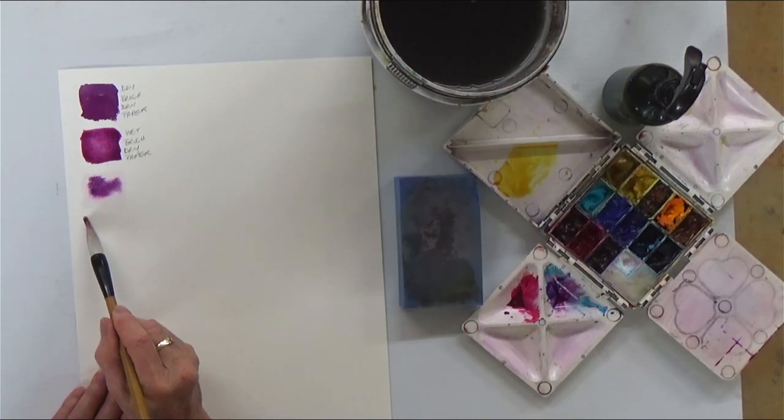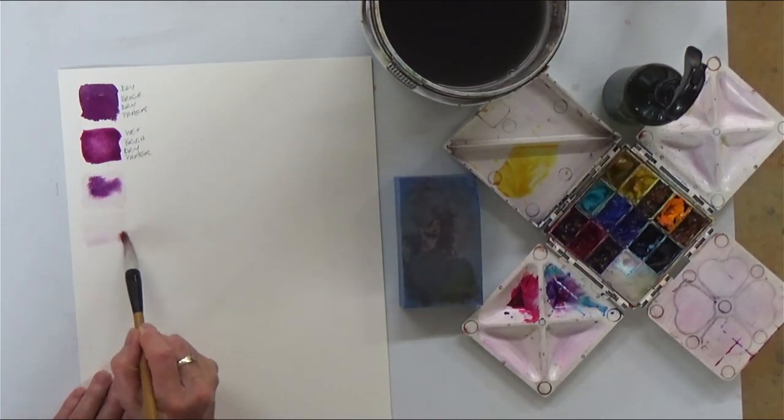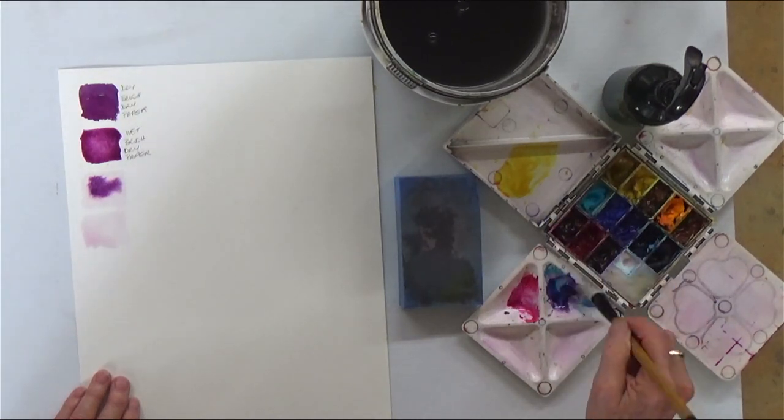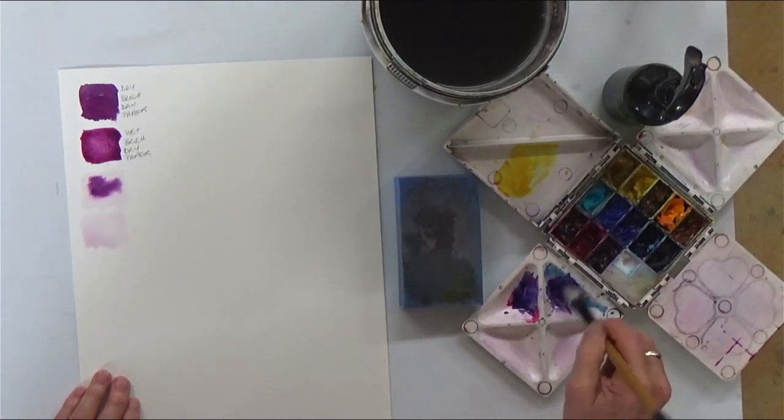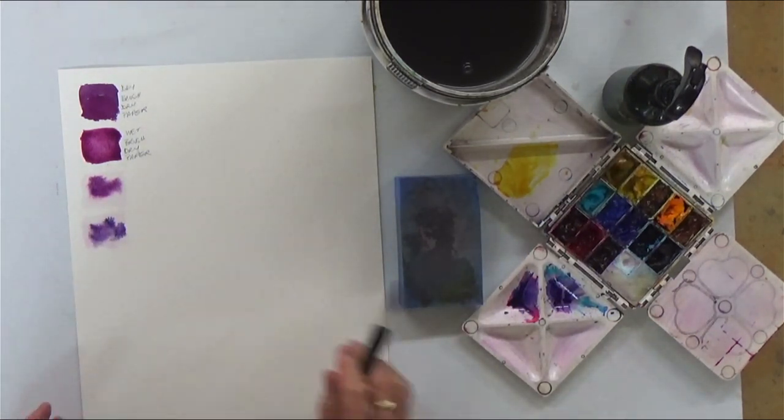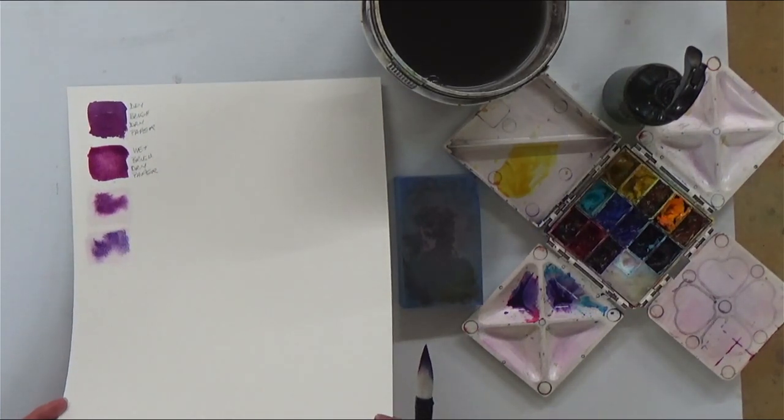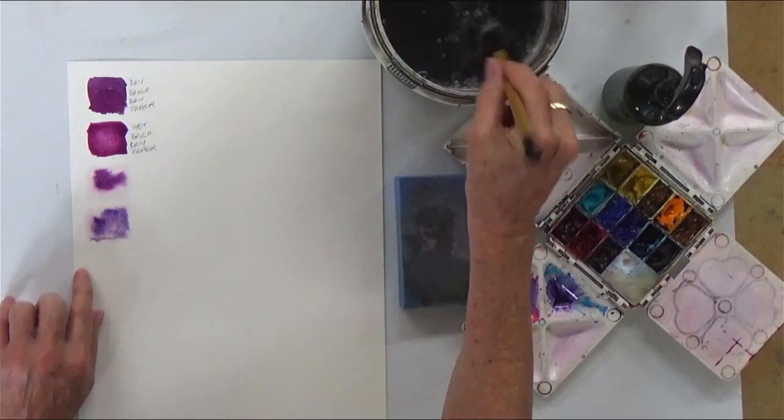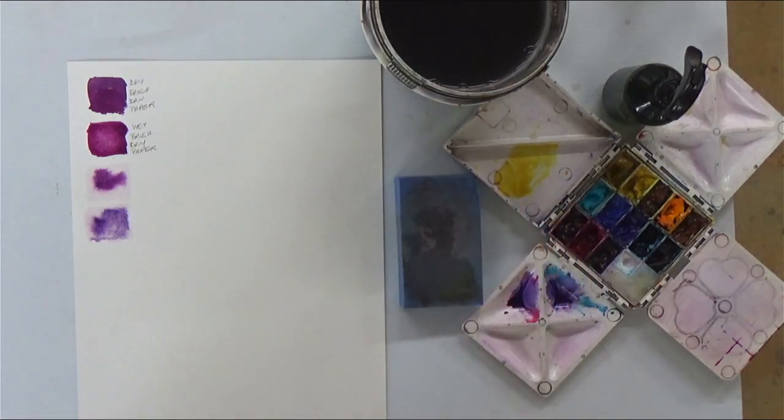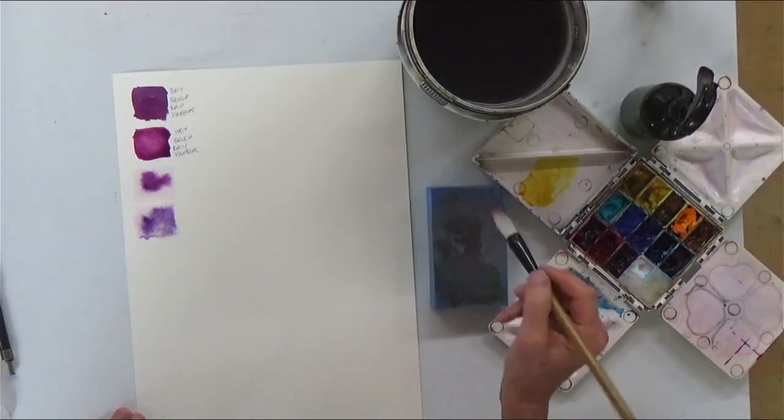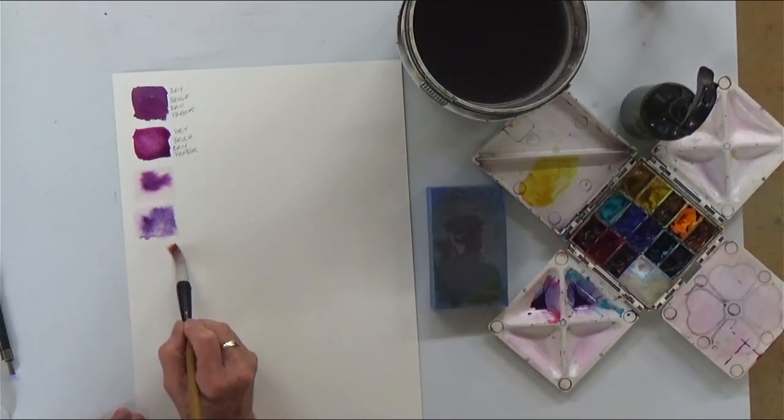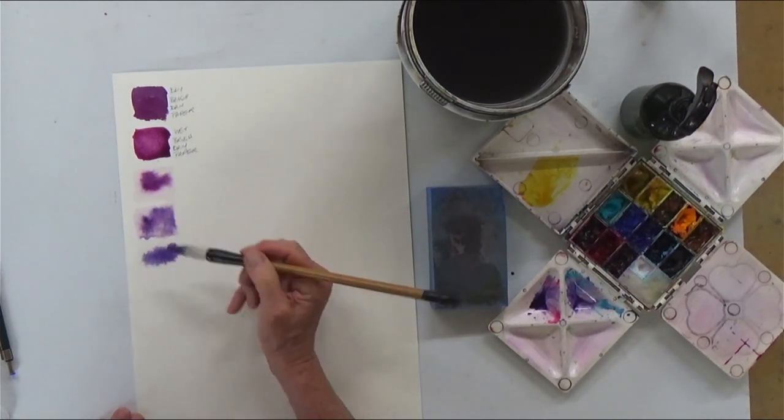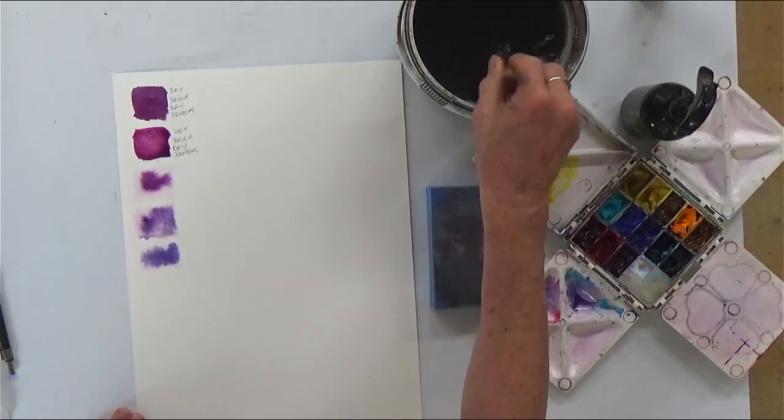To show you the difference, I'll make this paper here super wet. So lots and lots of water. And you can see that that paint, if I tip the paper up, it will travel over the surface of the paper very, very easily. I love painting wet in wet like that. It's not everybody's cup of tea, but I love it. Now we'll do dry brush onto wet paper. So you get very similar effects. So these have now started to move across the surface of the paper.